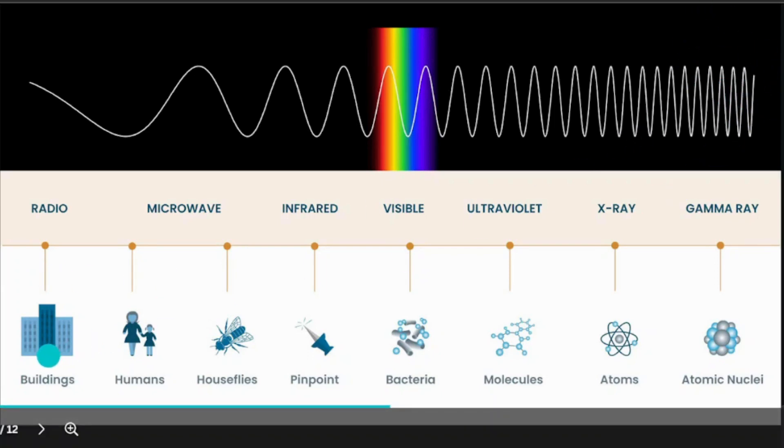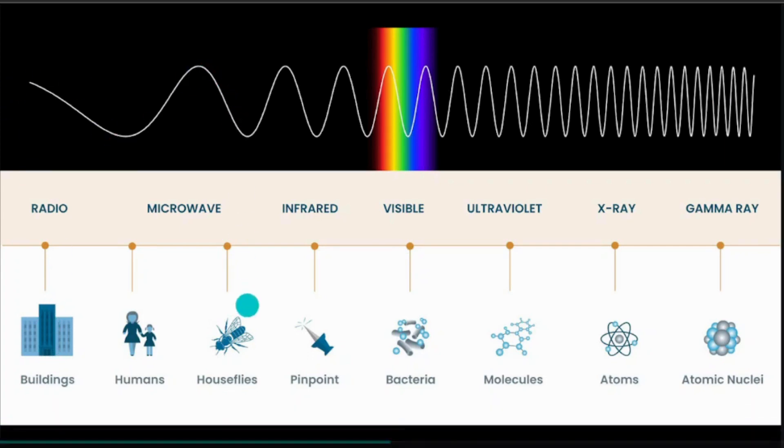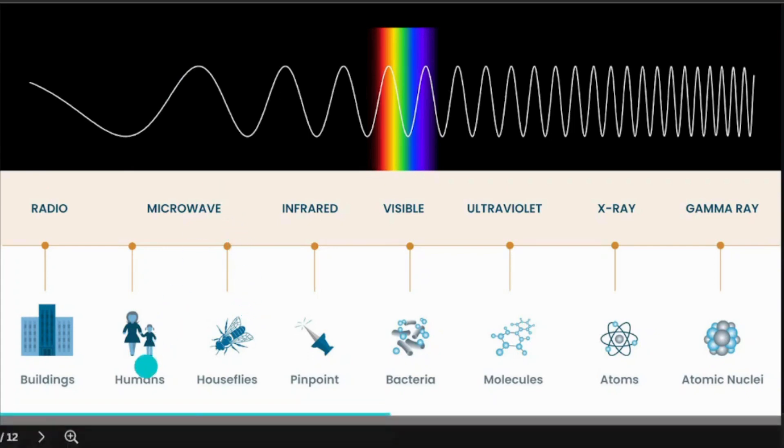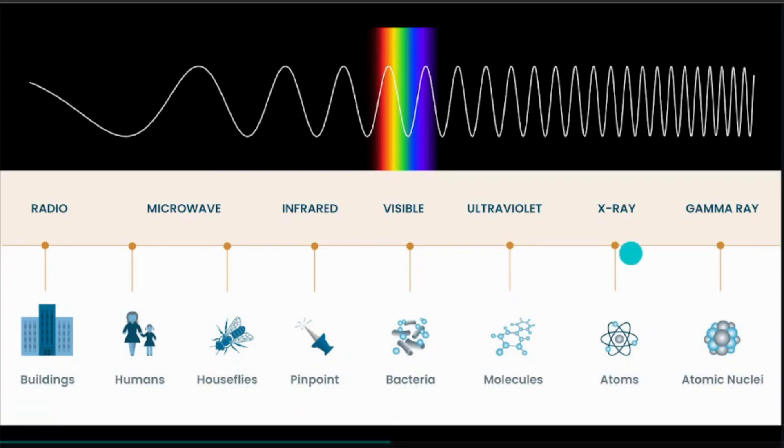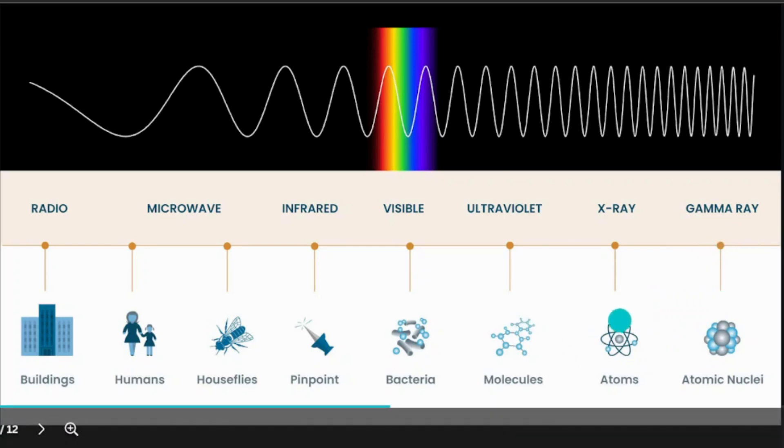It's because of the radio waves. Microwaves are the size of humans to a housefly. Infrared is pinpoint size. Visible light is the size of bacteria. Ultraviolet is the size of a molecule. X-rays are as small as an atom, then gamma rays as small as atomic nuclei. The small circle at the center of the atom is what we call the atomic nuclei.